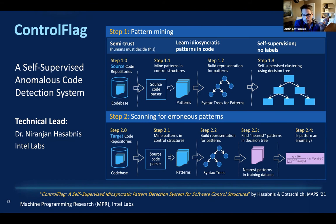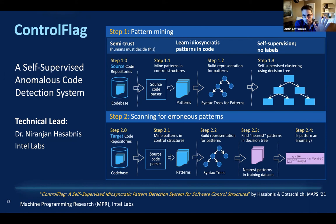Part of the reason we only mine control structures is that we're going to mine a billion lines of code, which is computationally very intense. By eliding away about 90% of the code that isn't a control structure, it makes control flag computationally tractable. A double free, for example, is a bug that ControlFlag would miss — but the upside is it makes ControlFlag computationally feasible in its training, allowing it to learn on significantly larger corpora than would be possible if we mined all the code.